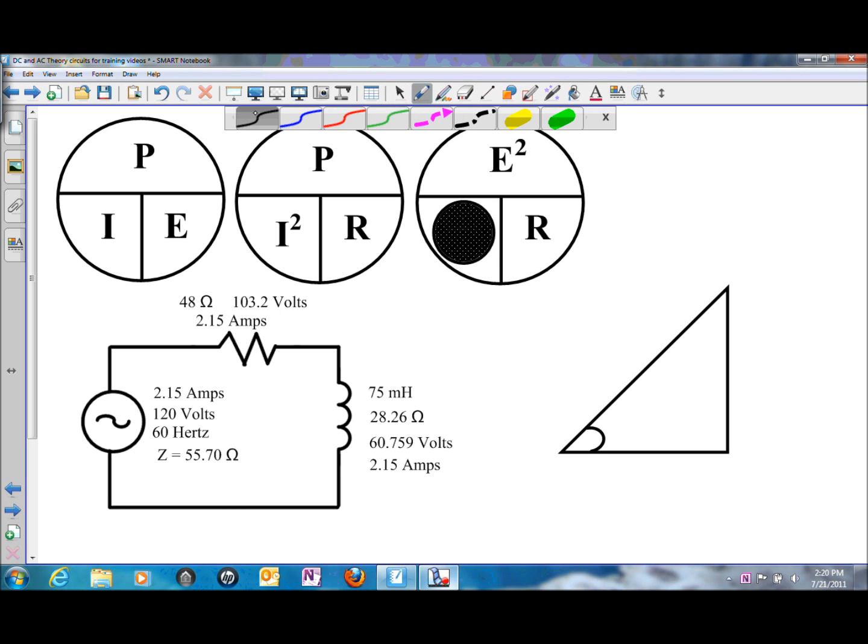Taking a look at the triangle that we are building, it has a couple of different names. Now this will be a power triangle. The power triangle has a couple of different names for each side. This is still going to be the resistive side of the triangle, and the resistive side has a couple of different names: it will either be watts or true power.